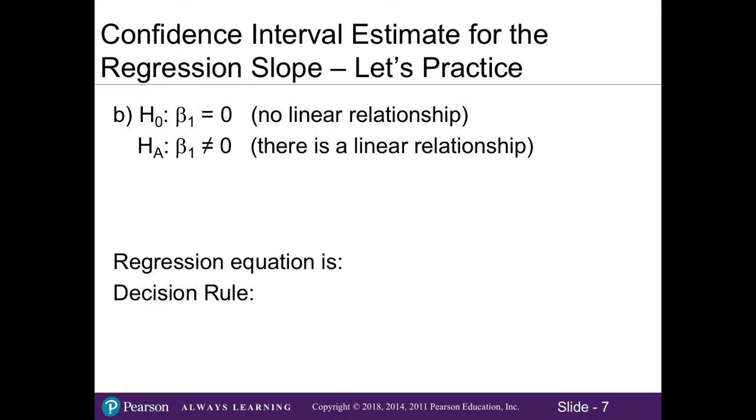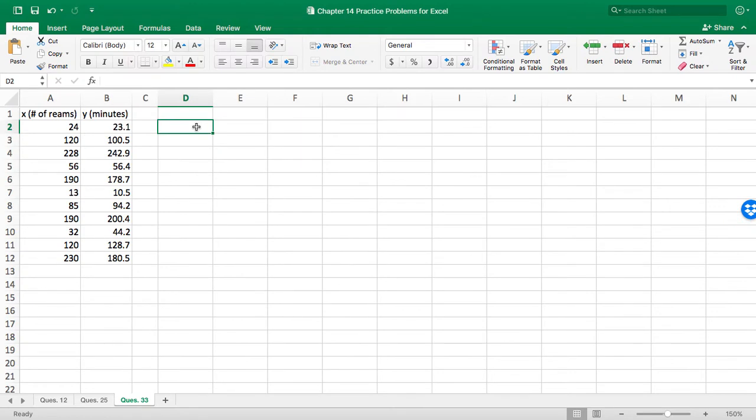Now in Part B, we need to run the regression analysis. So recall our formula, when we're testing the significance of our regression slope, states that in the null, there is no linear relationship. That's what the zero implies, there's no slope. And in our alternative, when it says it's not equal to zero, that means that there is a linear relationship.